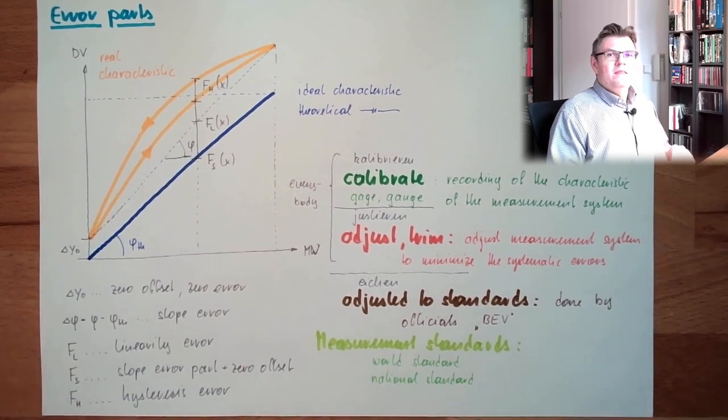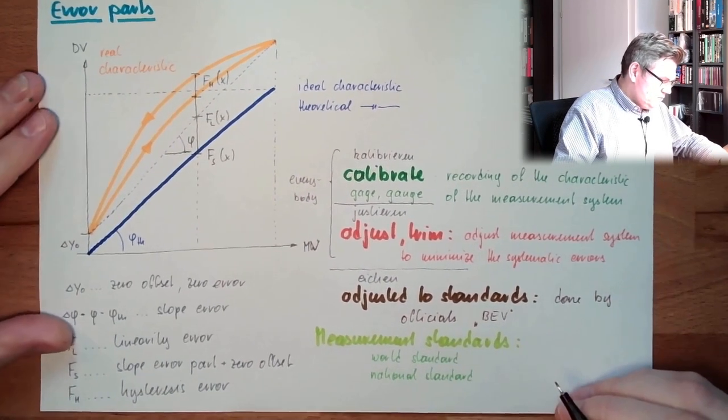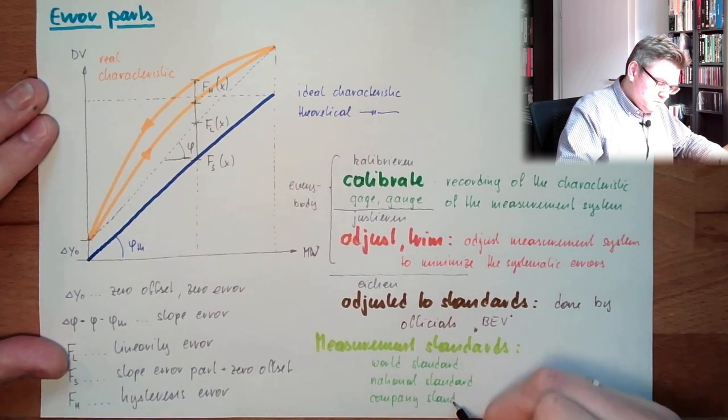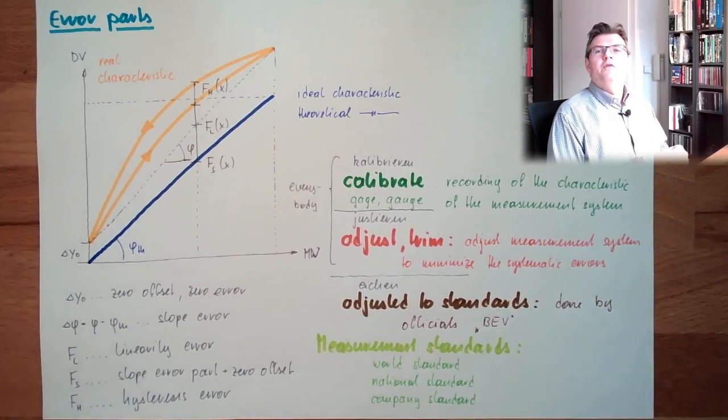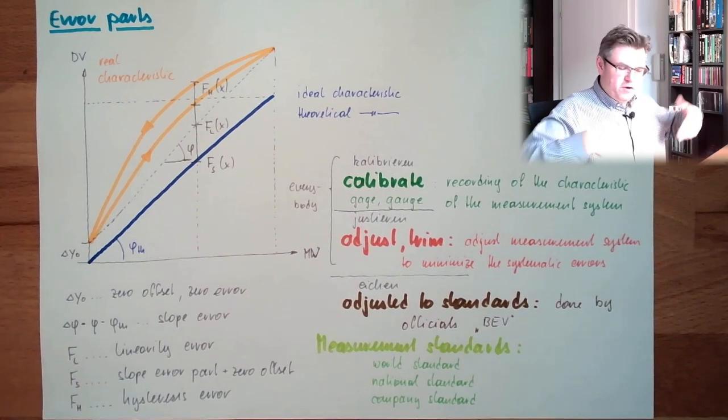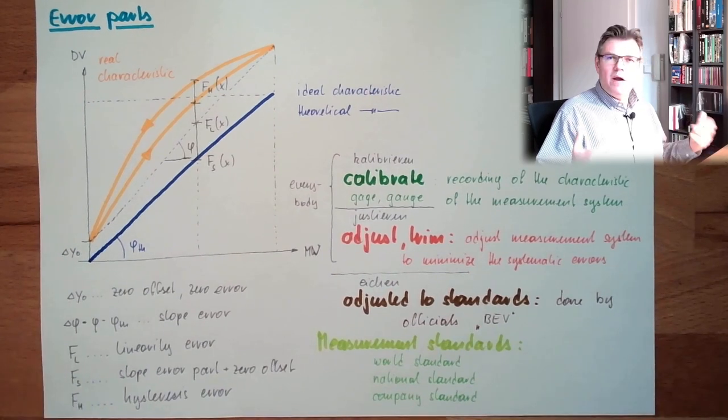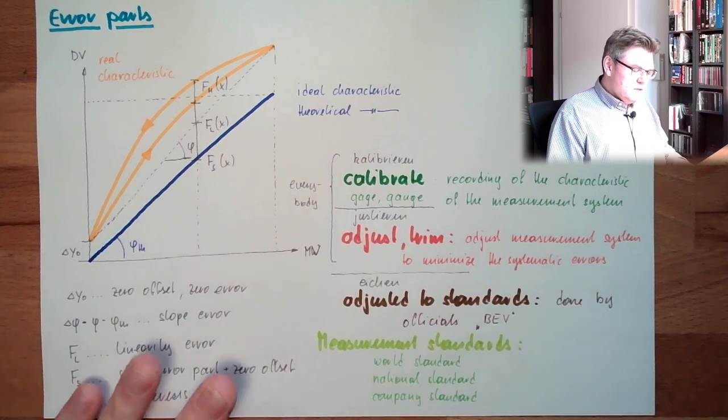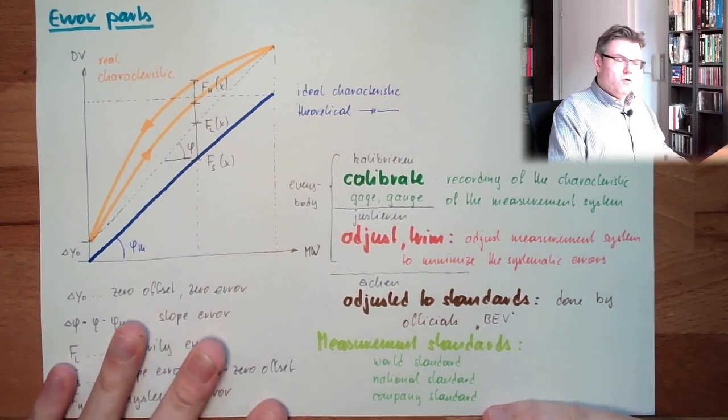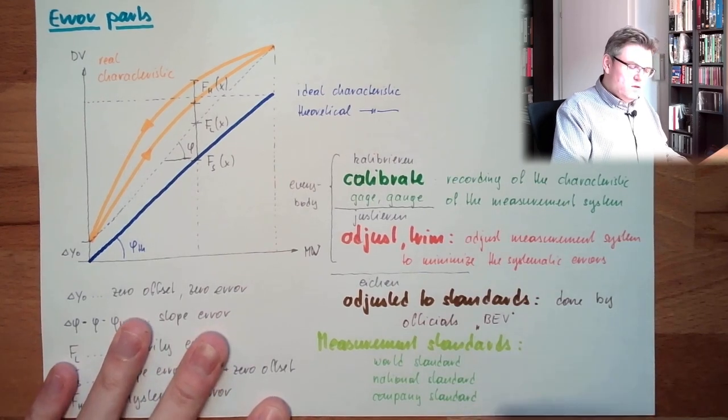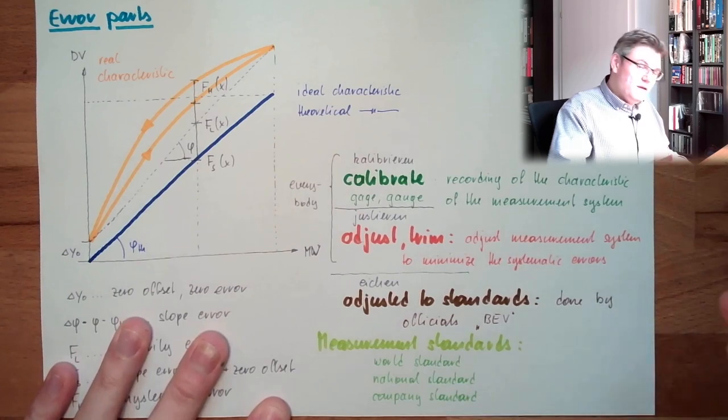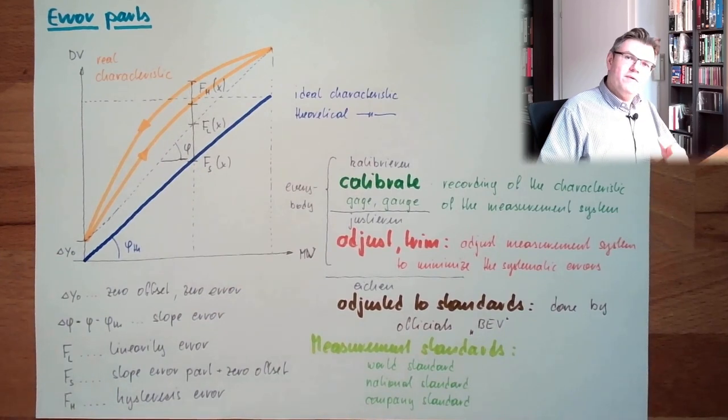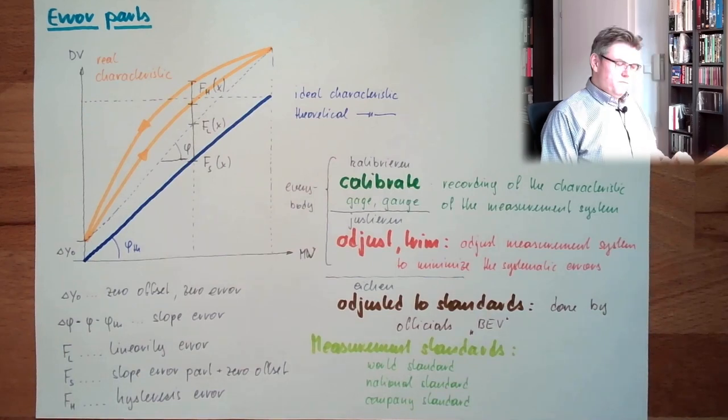World standard, national standard. Then there is the company standard. Those are kept in the different companies. So if you have a manufacturing company and you are manufacturing some parts, you have to be sure that your measurement devices work accordingly. You keep at certain places in your facility a company standard. You have to check this against the national standard. You get a certificate, your company standard is valid. Please come back in whatever years.